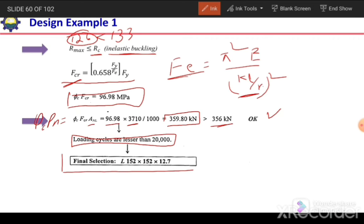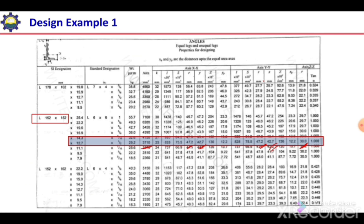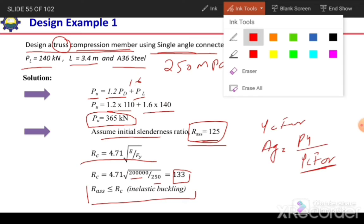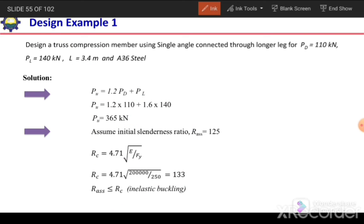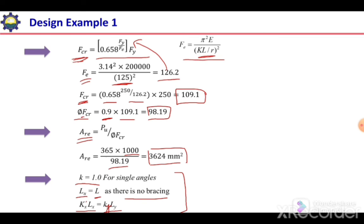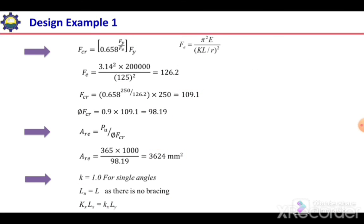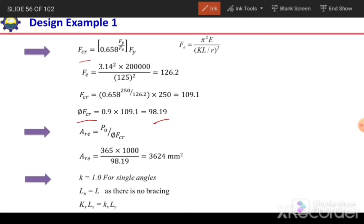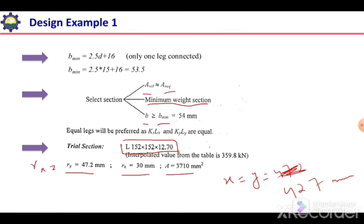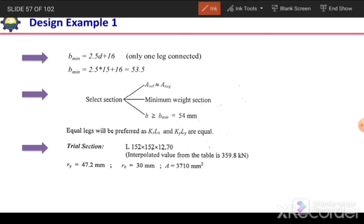Our final selected section is L152 × 152 × 12.7. To summarize the design procedure: we calculated the factored applied load, then assumed a slenderness ratio and compared it with the critical slenderness ratio. For inelastic buckling we used the appropriate expression to calculate φcFcr, then computed the required area. We then selected a trial section based on area, B_minimum, and a preference for an equal leg section since the effective length is the same in both directions.